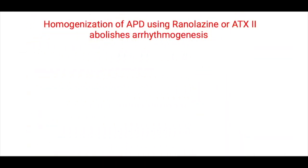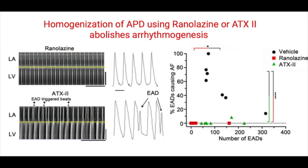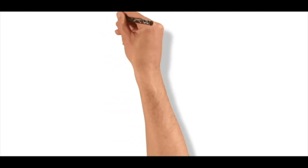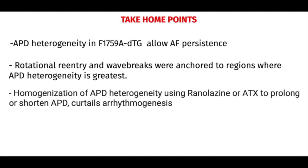We demonstrate that we can attenuate the action potential duration either by infusing ranolazine to shorten the action potential duration or by infusing anemone toxin to increase the action potential duration. This leads to homogenization of the atrial tissue. Anemone toxin was able to reduce action potential duration heterogeneity and was able to attenuate the inducibility of atrial fibrillation. However, the early afterdepolarizations were still present. This suggests that action potential duration heterogeneity is critical for the persistence of atrial fibrillation. Rotational reentry and wave breaks are anchored to regions of highest action potential duration heterogeneity. Furthermore, homogenization of action potential heterogeneity was able to attenuate arrhythmogenesis.